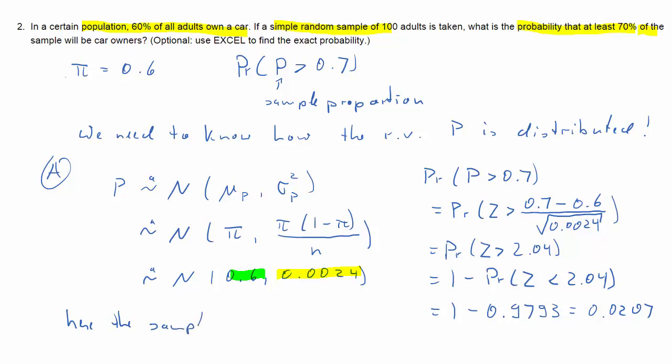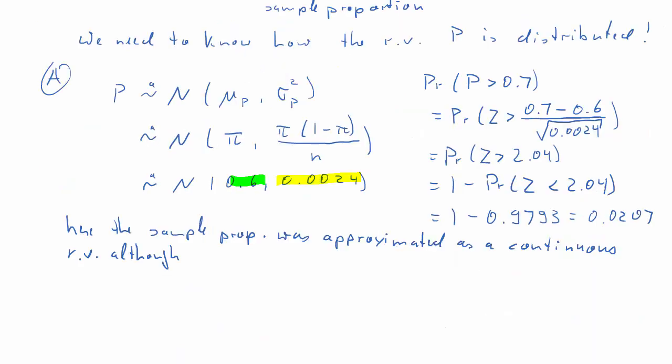So, why is this an approximation? Here, the sample proportion was treated as if it was a continuous random variable. A normal distribution is a continuous distribution. But, of course, the proportion of a sample of 100 isn't continuous. It's discrete.